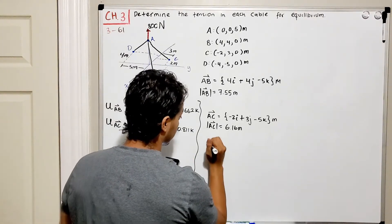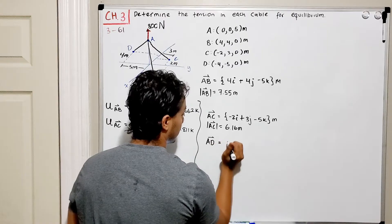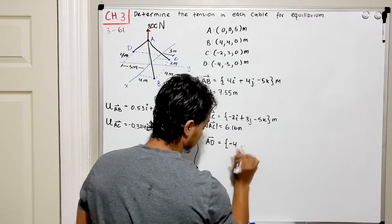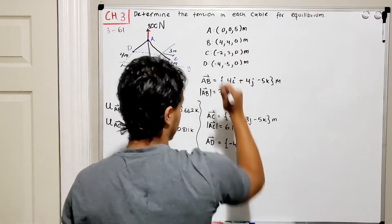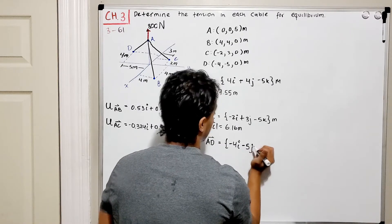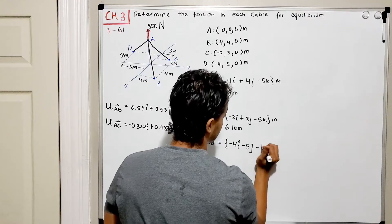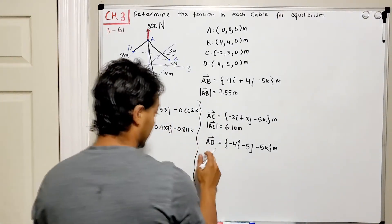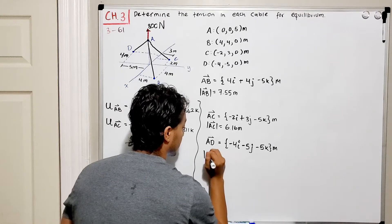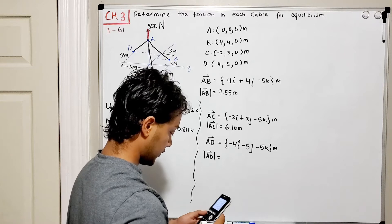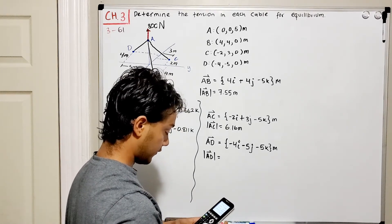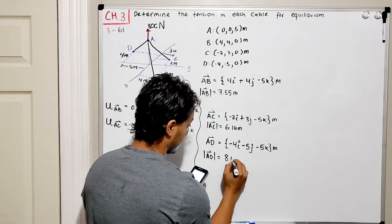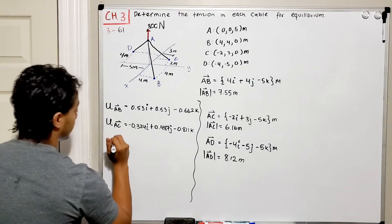Finally for cable AD: negative four minus zero gives negative four in the I direction, negative five minus zero gives negative five in the J direction, and zero minus five gives negative five in the K direction. The magnitude is the square root of four squared plus five squared plus five squared, equal to 8.12 meters.